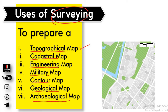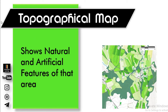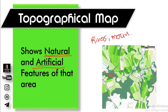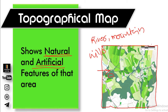A topographical map shows the natural and artificial features of an area. Natural features include rivers, lakes, mountains, and hills. Artificial features include whatever manmade structures are present in that area. In short, the map shows topography, and as always, the key ingredient of a map is its scale.